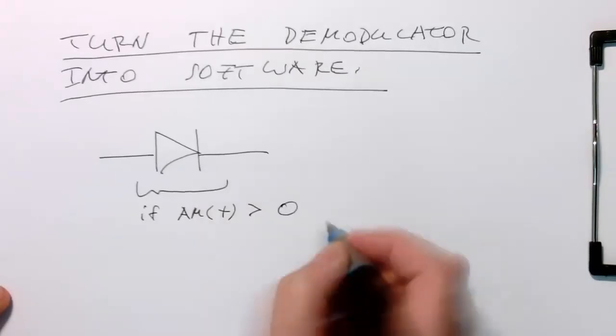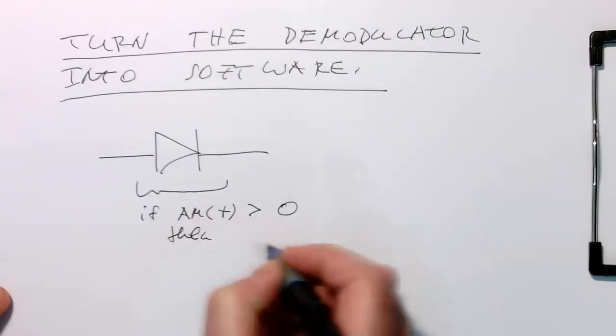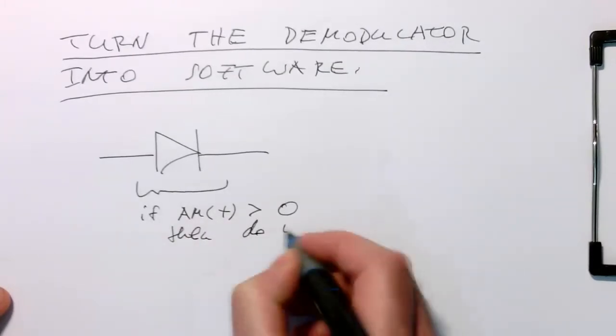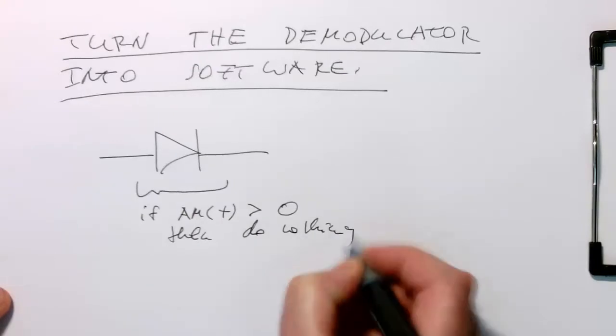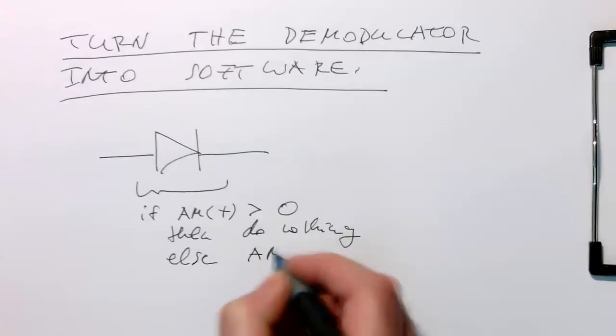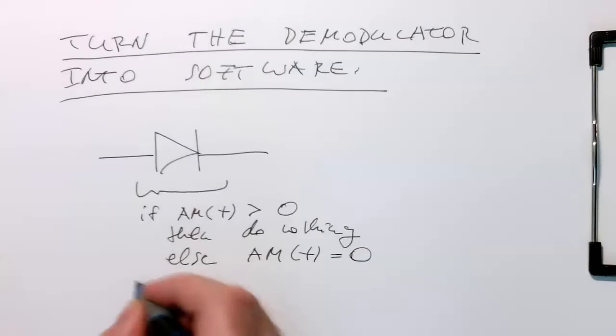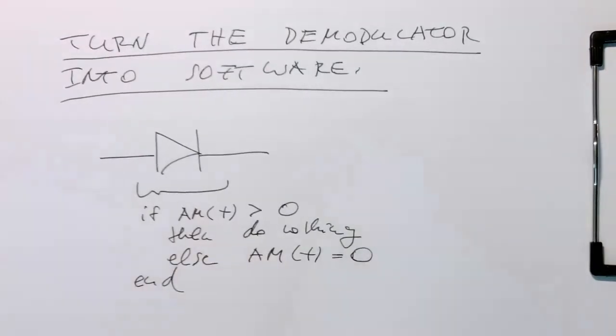...then we just leave it alone, do nothing. And otherwise we say AM of t becomes zero. So that's basically what we need to do for the diode.